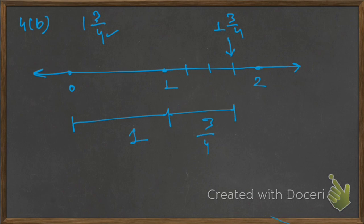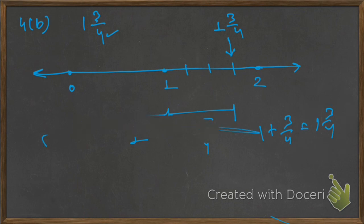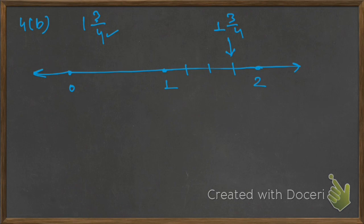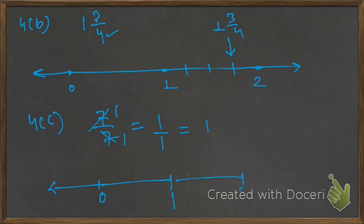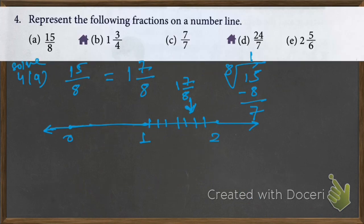Now question 4B: 1 and 3 upon 4. Here write 1 and here 2 on the number line. This is total 1 and here we represent 3 upon 4, so divide into 4 parts: 1, 2, 3, 4. This becomes 1 and 3 upon 4, because this total is 1 and this total is 3 upon 4. So 1 and 3 upon 4 means 1 plus 3 upon 4.